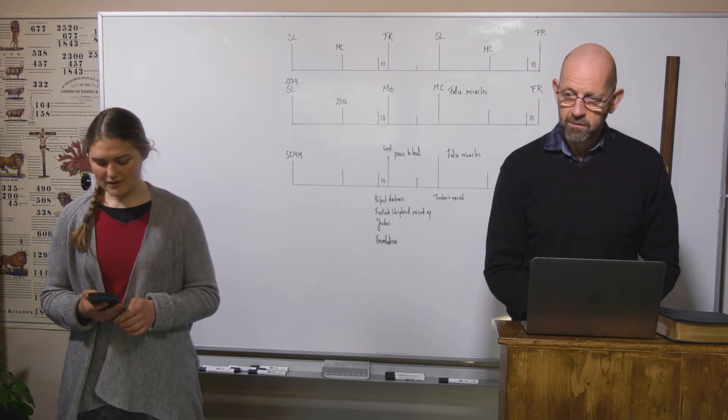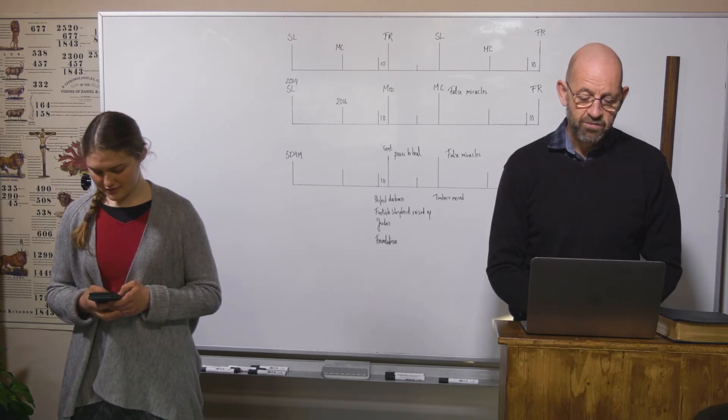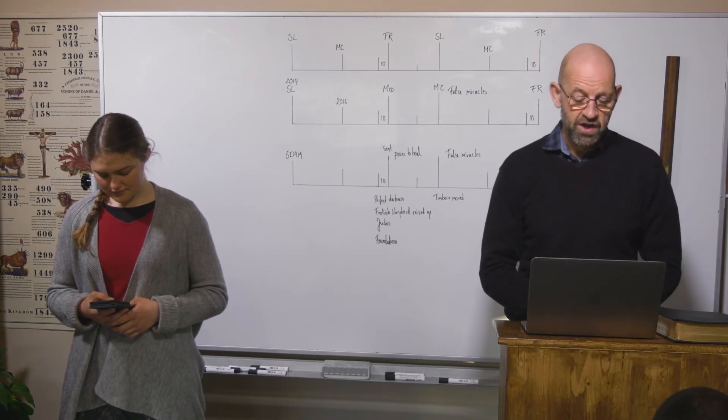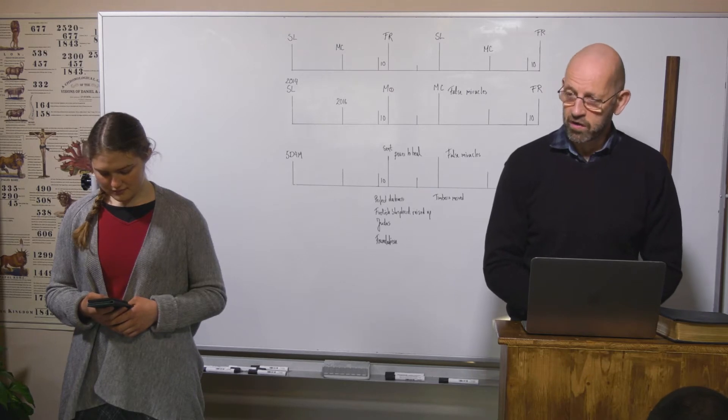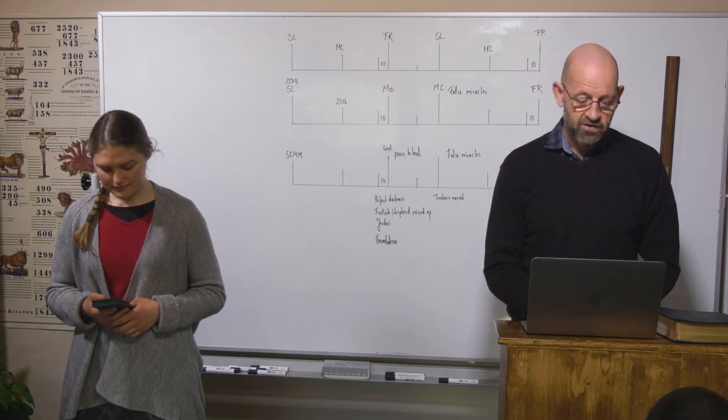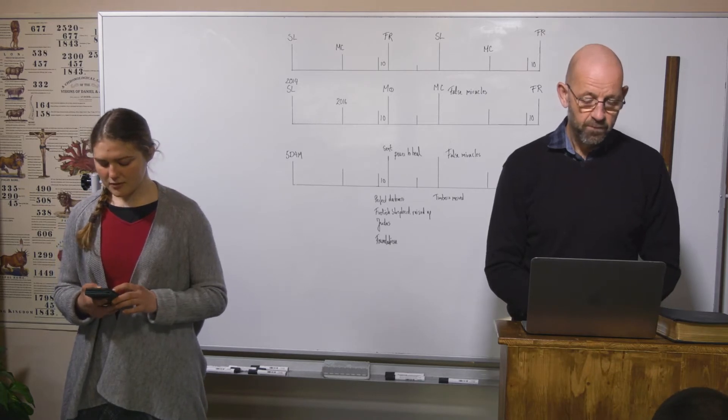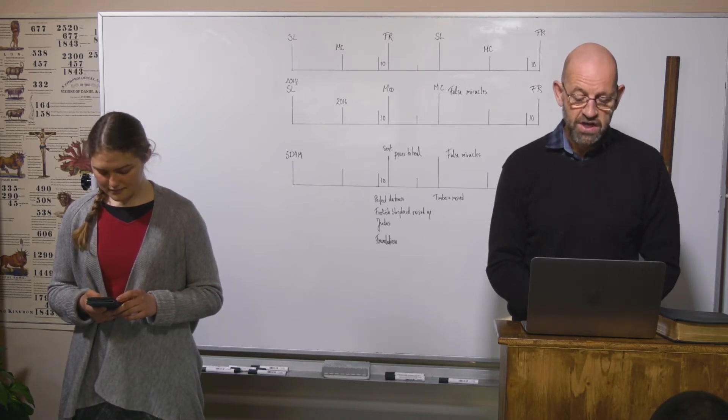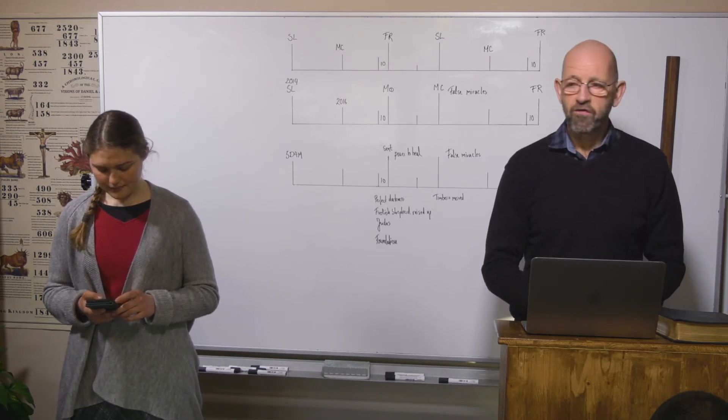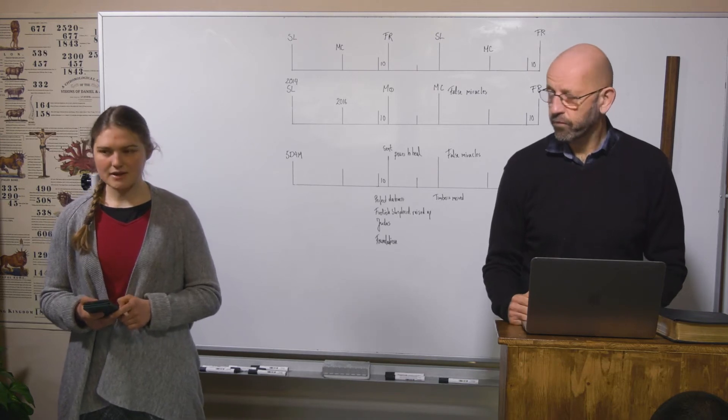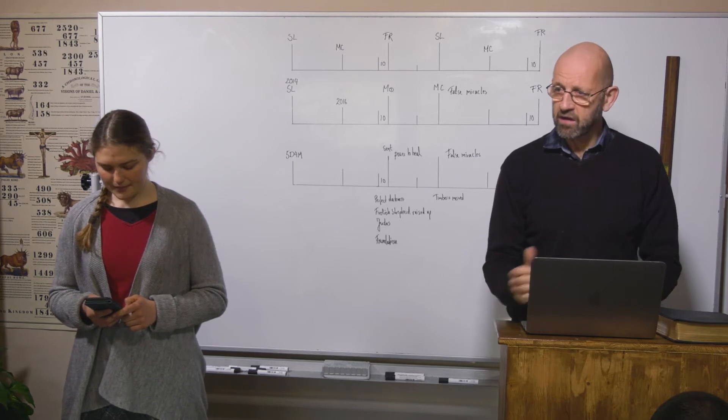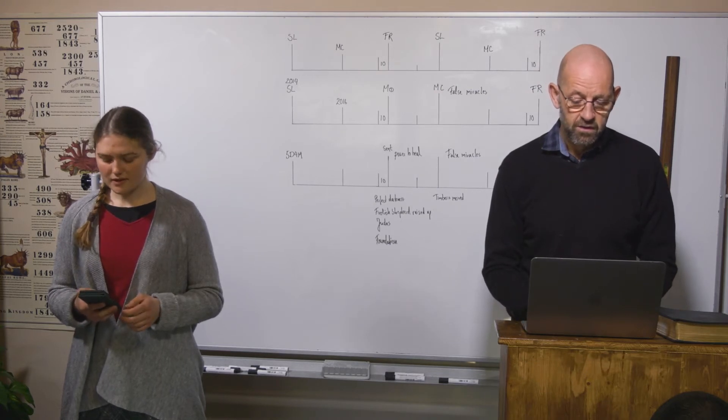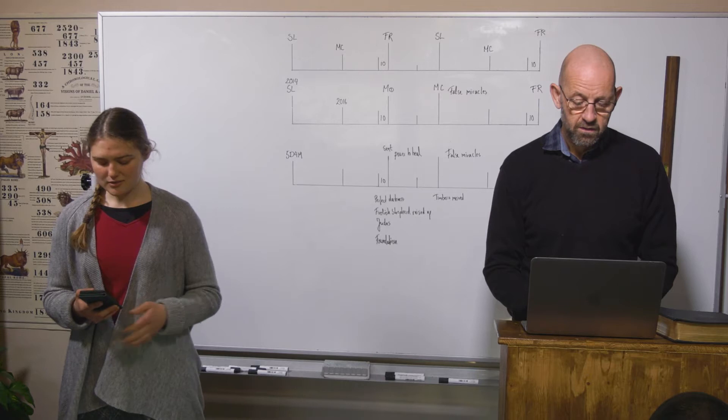1 Kings 17:1 says Elijah said unto Ahab, As the Lord God of Israel liveth, there shall not be dew nor rain these years but according to my word. Luke 4:25 tells us the heaven was shut up three years and six months. Here you have an illustration of the 1260. Jezebel represents the papacy who rules for this period over the kings of the earth.